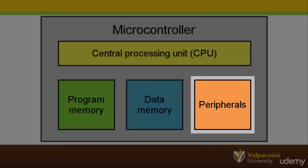Finally, microcontrollers have a functional block called peripherals. Unlike program and data memory, there is not a standard or universally accepted definition of a peripheral. For now, we will just say it is the block that contains all of the additional features that a microcontroller uses to do its job. We'll go into more details about peripherals in a couple more videos.